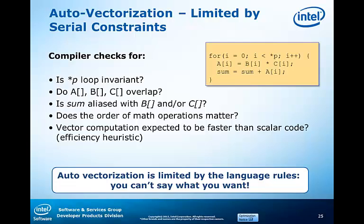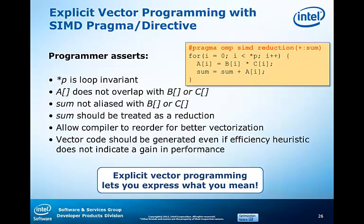You just can't say what you want. The explicit programming effort afforded by the pound-pragma OMP SIMD with associated reduction clause allows the developer to assert known information about the code, the memory access, and the use of data. The programmer is asserting the truth of these statements, so the compiler can treat them as being satisfied and it is okay to vectorize, even if one of the assertions is incorrect.